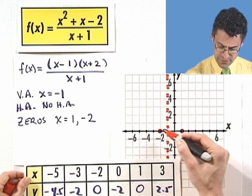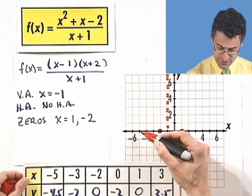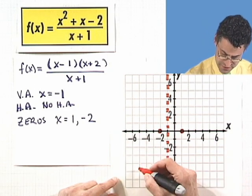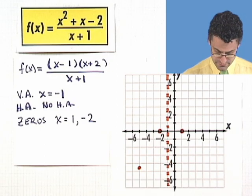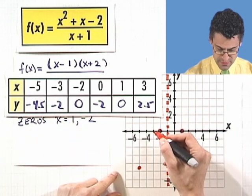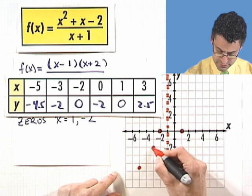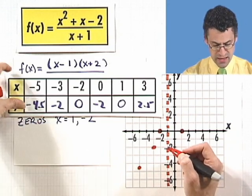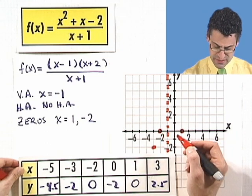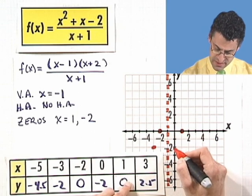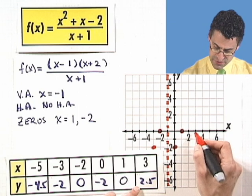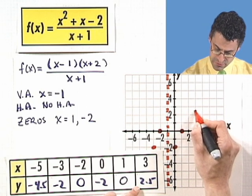So at negative 5, I'm at negative 4½. So let me slide this down here. Negative 4, negative 5, negative 4½ is right here. Negative 5, so there's that point. At negative 3, I'm at negative 2. And then at negative 2, I'm at 0. We already had that. Now at 0, I'm at negative 2. So at 0, I'm at negative 2. That's right here. At 1, I'm at 0. We knew that. And at 3, I'm at 2.5. 2, 3½, so 2.5 is right there.